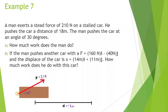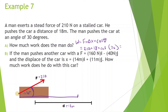Work is equal to force times displacement times cosine of theta. So that's 210 times 18 times cosine of 30 degrees, since the angle between the force and the direction of travel is 30 degrees. That gives us 3,273 joules — that's how much work he does, or how much energy he puts into the car.